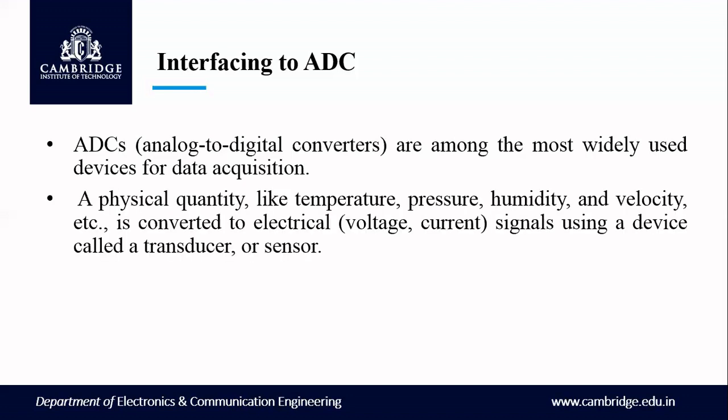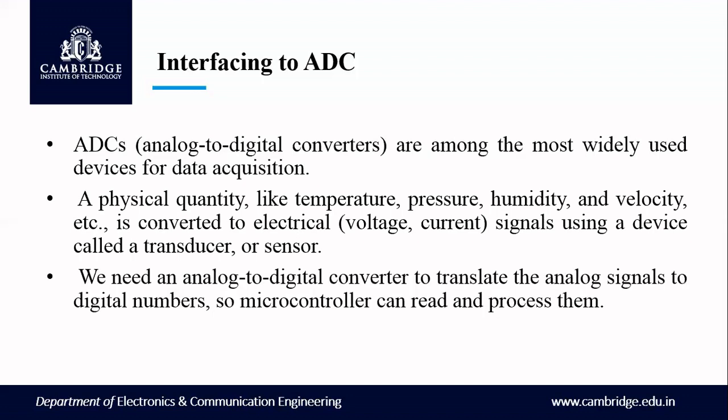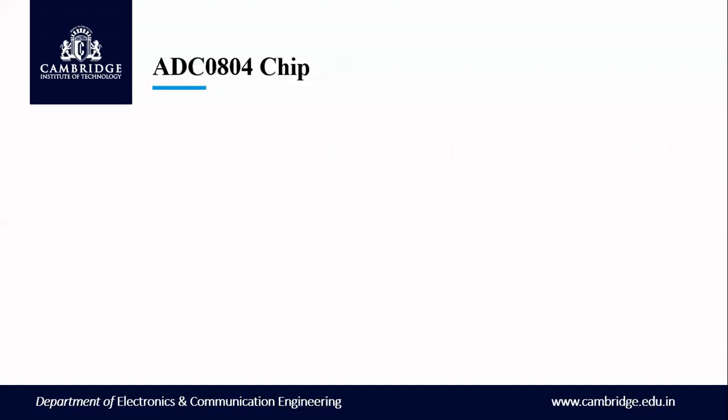Physical quantities like temperature, pressure, humidity and velocity etc. are converted to electrical signals — that is voltage and current — using devices called transducers or sensors. These sensors or transducers convert real analog signals into electrical voltage and current. We need an analog to digital converter to translate the analog signal to digital numbers so that the microcontroller can read and process them. That is the main objective of converting analog to digital.